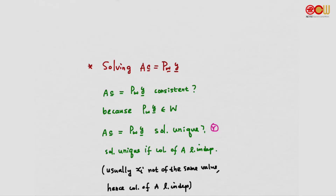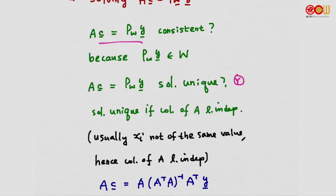One approach is to compute P_W*y and then apply Gaussian elimination to solve the system. But in this particular case, there is an alternative approach. We plug in the projection matrix P_W, which can be written as A*(AᵀA)⁻¹*Aᵀ since the columns of A are linearly independent and form a basis. Substituting this in gives us a long expression, but we proceed.